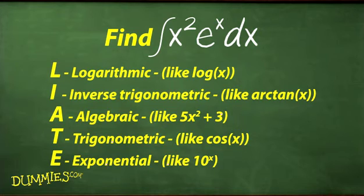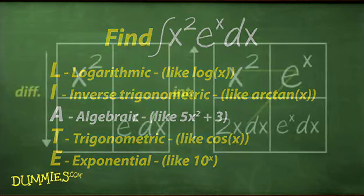Go down the LIATE list and pick the u. x squared times e to the x power times dx contains an algebraic function, x squared, and an exponential function, e to the x power. It's an exponential function because there's an x in the exponent. x squared is the first on the LIATE list. So, that's your u. Do the grid thing.